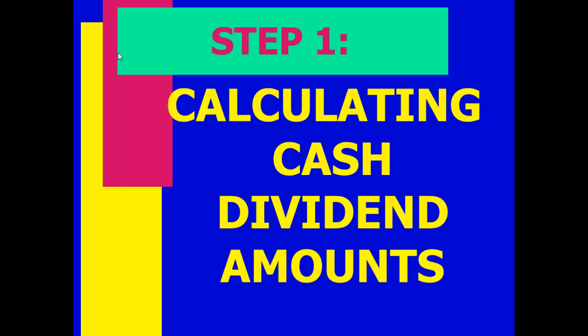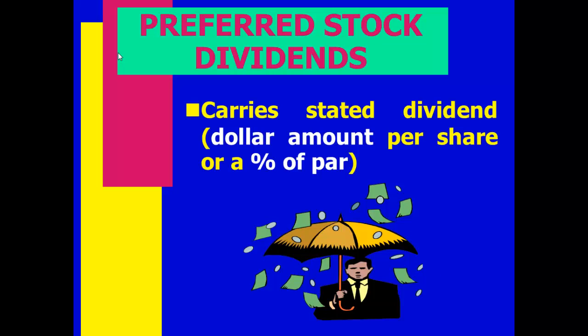The first thing we need to do is calculate the amounts for dividends, then we'll make journal entries. Remember, preferred stockholders have preference — they get what is owed to them before common stockholders get anything. Preferred stock can be stated one of two ways: as a certain dollar amount per share, or as a percent of par value.